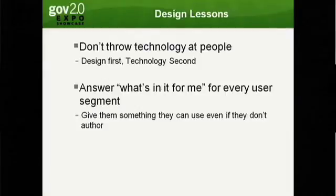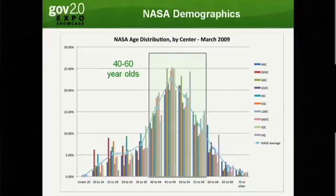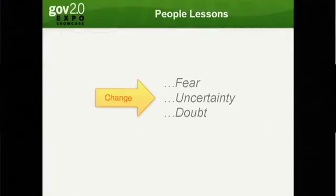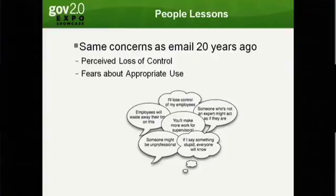Answer the question: what's in it for me? Because we've got a lot of different demographics in our organization. Our biggest hump is between 40 to 60, which means we can expect that people will respond to things, maybe they'll reply, but they won't author very much. So we have to give them something to do to address that. We also have to address the fear about change — especially in that 40 to 60 year old hump, there is fear, uncertainty, and doubt about: what if I publish something and I make a mistake and everybody sees it.